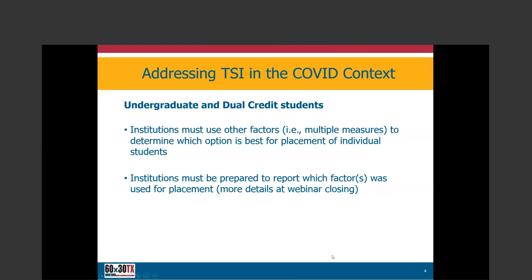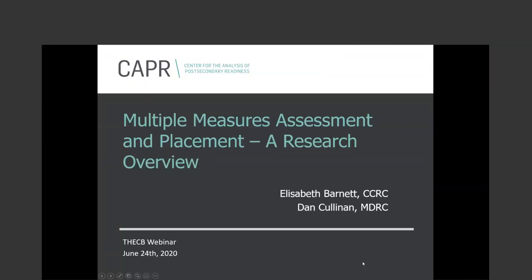In order to see how students fared, it is critical for institutions to accurately report which provisions and which factors were used for placement purposes. This will allow us to see how students fare based on those placements and use the data for possible future policy recommendations or changes to TSI. Our colleagues Dr. Melissa Humphries and Dr. Eugene Kim will discuss more details about reporting at the end of this session. I'll now turn it over to Dr. Barnett and Dr. Cullinan to talk about multiple measures assessment and placement.